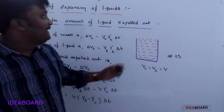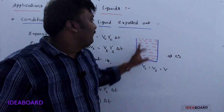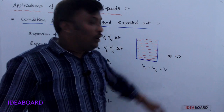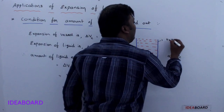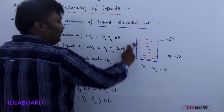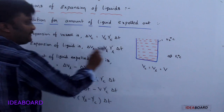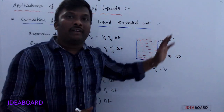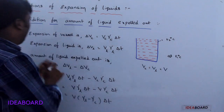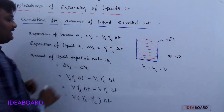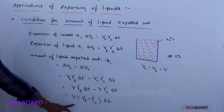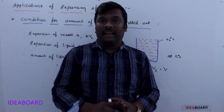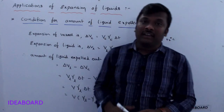To summarize: a container completely filled with liquid except water at T1 degrees Celsius has Vc = Vl = V. When temperature increases to T2, both vessel and liquid expand. The amount of liquid expelled out is given by V · (gamma L minus gamma C) · delta T. This is about the expansion of liquids and applications of expansion of liquids.